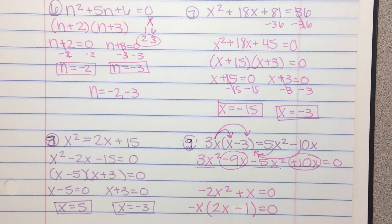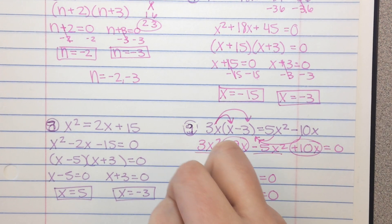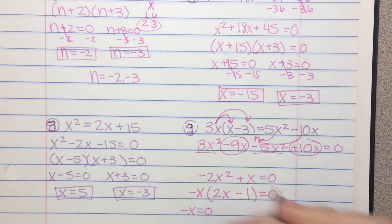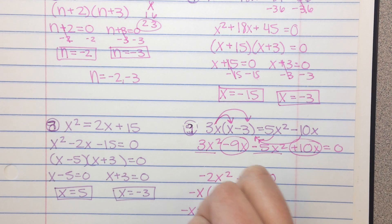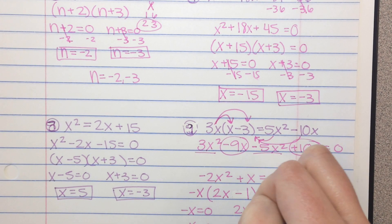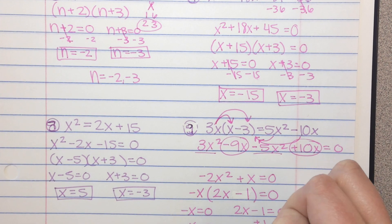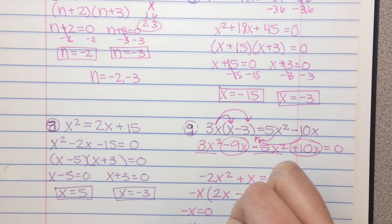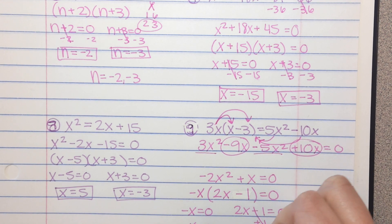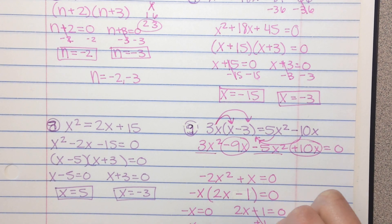And you can set each one equal to 0. Negative x equals 0. It's just x equals 0. 2x minus 1 equals 0. We can add 1. And then we have 2x equals 1. Divide by 2. You get x equals 1 half.